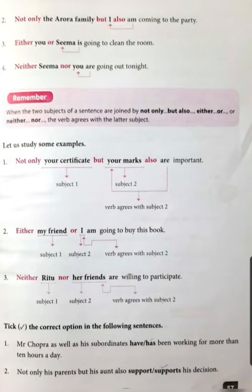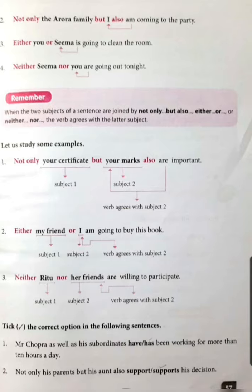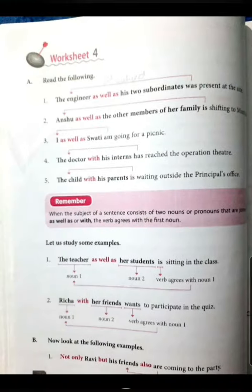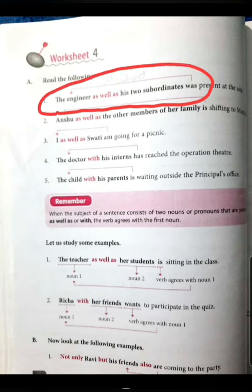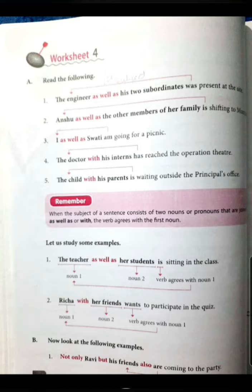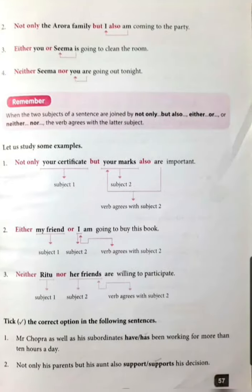Now we will be doing the exercises. 'Mr. Chopra as well as his subordinates have/has been working for more than 10 hours.' When two subjects are joined by 'as well as' or 'with', the verb agrees with the first noun. Mr. Chopra is the first subject and he is singular, so the answer will be 'has'.